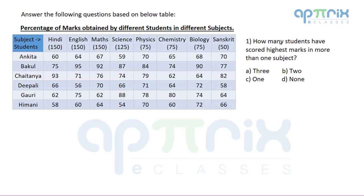Question 1 asks: how many students have scored the highest marks in more than one subject? We need to find, for each subject column, which student scored the highest. Since every percentage in one column shares the same base, a higher percentage means higher actual marks. So we look for the highest percentage value in each column. In Hindi, Chaitanya is highest.